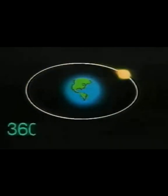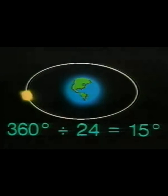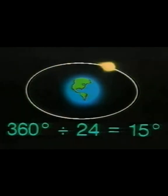For conceptual convenience, in celestial navigation it is assumed that the Earth is motionless and that the sun is continuously moving around it. In the course of 24 hours the sun travels 360 degrees right around the globe. Figure it out: 360 degrees divided by 24 hours means that in one hour the sun moves 15 degrees.